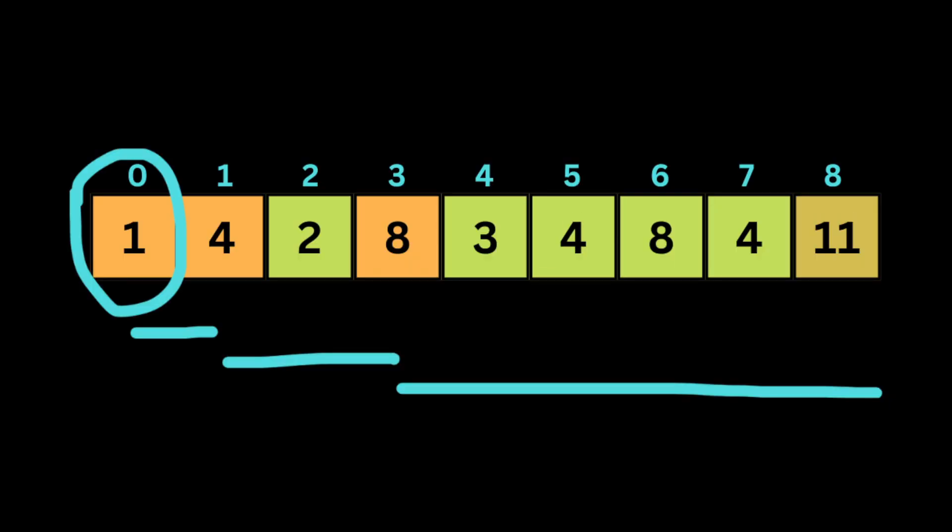To summarize, we use the greedy algorithm to find the minimum number of jumps required to reach the end of the input array. We start at the first element and at each step select the best jump that will take us closer to the end. By doing this, we hope to find the shortest path to the end. I hope now you have a clear picture of how to solve the problem. Let's jump into coding the solution.